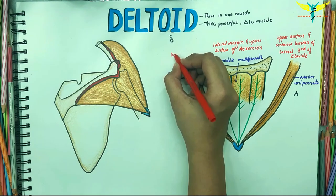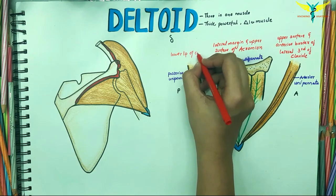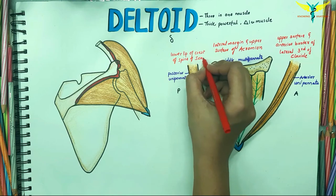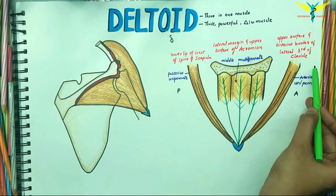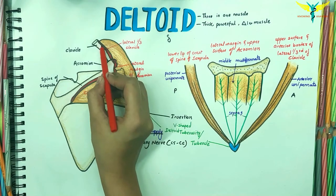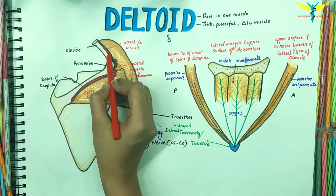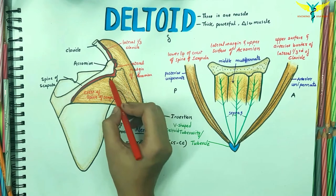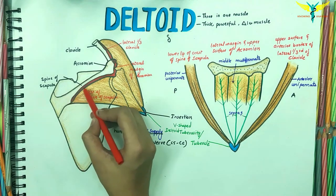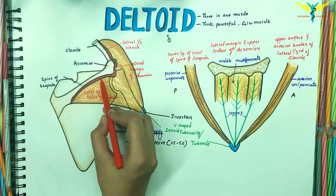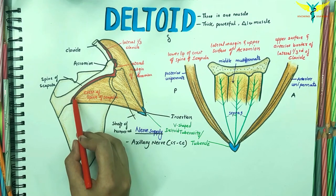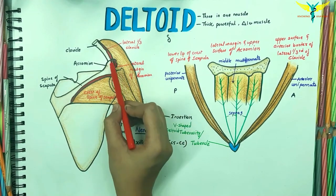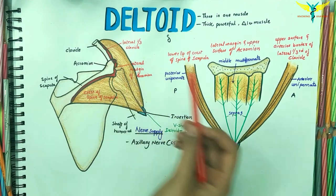These three are the origins of the deltoid. The red line indicates the origin of the anterior unipinnate part. The acromion process is the origin of the middle multipinnate part, and the crest of the spine of the scapula is the origin of the posterior unipinnate part. In this diagram, this is the spine of the scapula, the acromion process, and the clavicle.